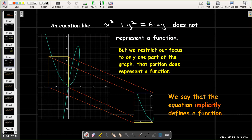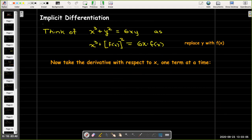So how would I find the rate of change then of y with respect to x on that portion of the graph? Well, we're going to use something called implicit differentiation.